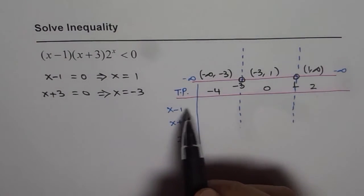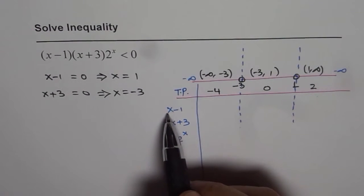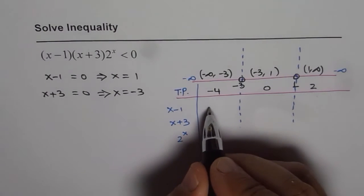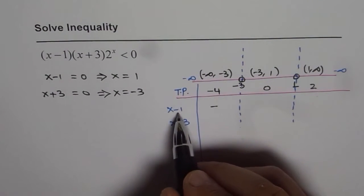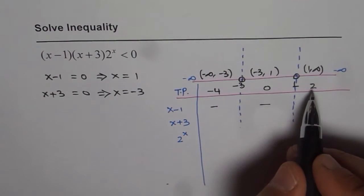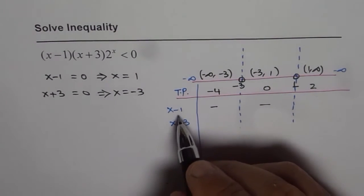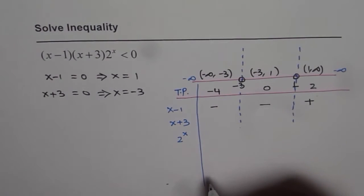Now if I place minus 4 in x minus 1, I will get negative 5, so basically it will be negative. If I put 0 here, 0 minus 1 will be negative. If I replace x with 2, 2 minus 1 will be positive.